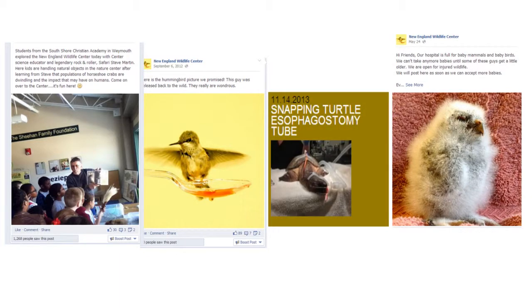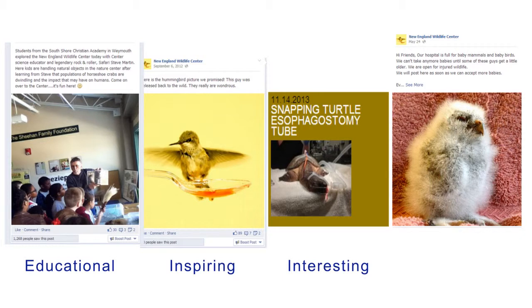Content. These are the four types of content people find most appealing and share the most. The first is educational. Then we have an inspiring category — like this hummingbird we released, sitting on a spoon drinking hummingbird syrup. Another category is interesting — something that captures people's imagination, like when we installed an esophagostomy tube on a snapping turtle. And then cute — cute works in the world of animals.